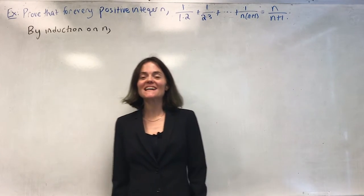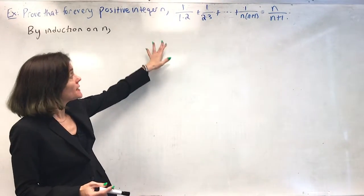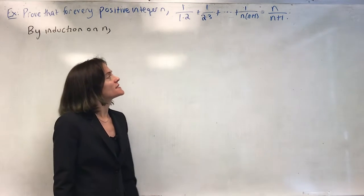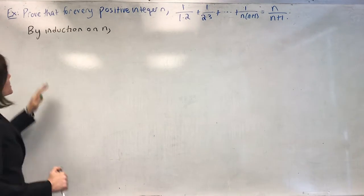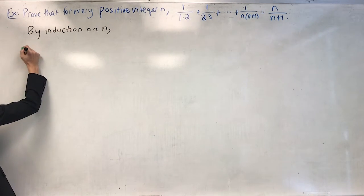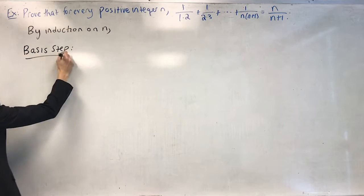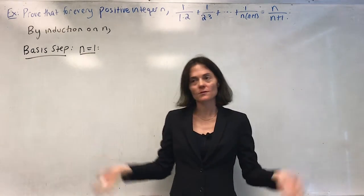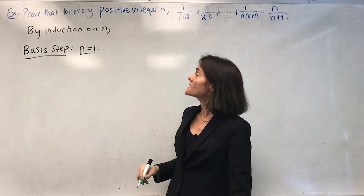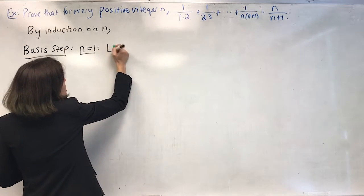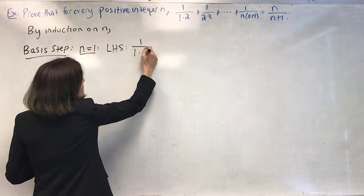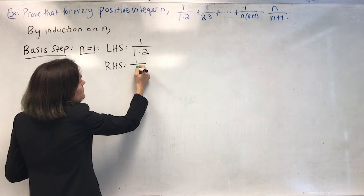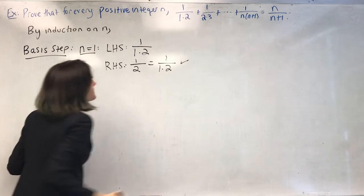Let's do one more proof by induction. This is not a recursively defined function — it is an equation. We want to prove for every positive integer n that this sum on the left-hand side equals this fraction on the right-hand side, and we will do this by induction. Our basis step, always at the bottom: the first positive integer is 1. The left-hand side is 1 over 1 times 2, and the right-hand side with n=1 is 1 over 2, which is definitely equal. Very nice.